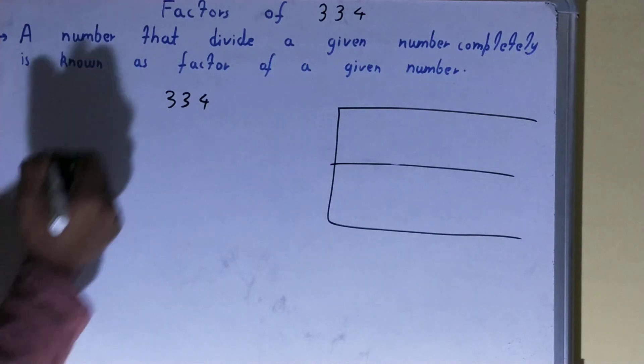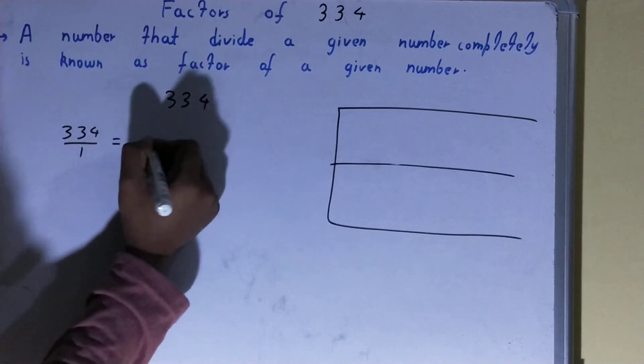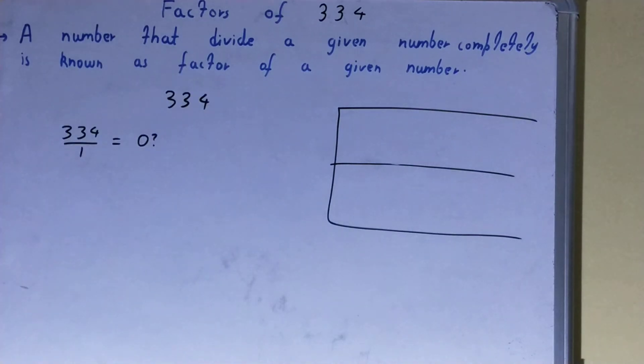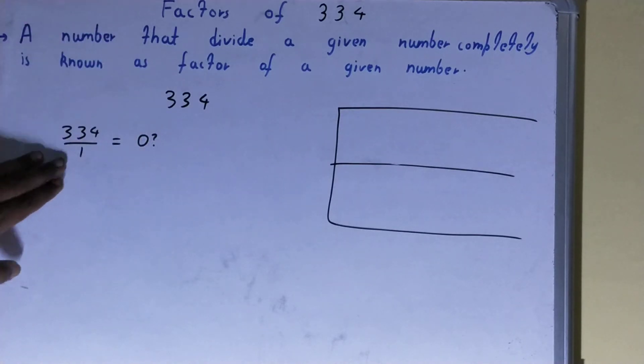That is 1. Divide the number 334 by 1. If you do so, will you get the remainder 0? The answer is yes. Because you will get the remainder 0, 1 is the factor of 334.